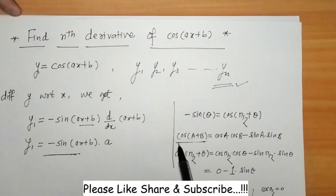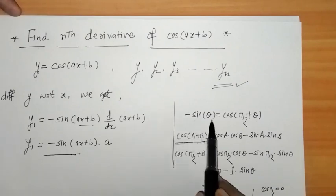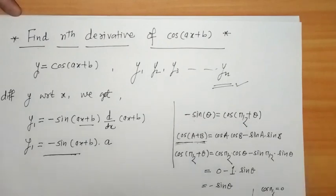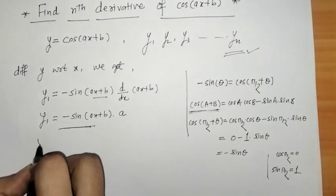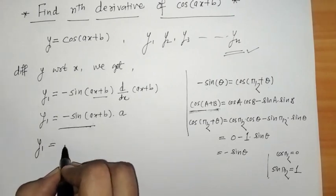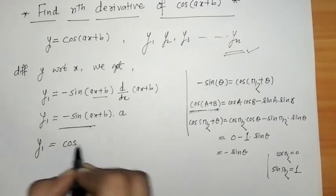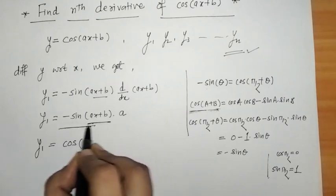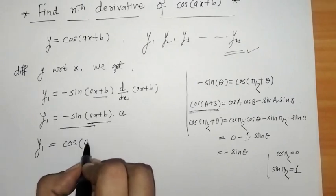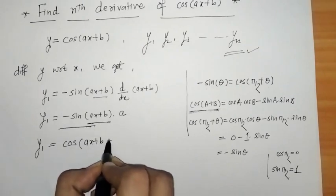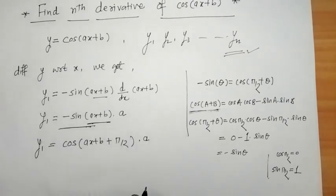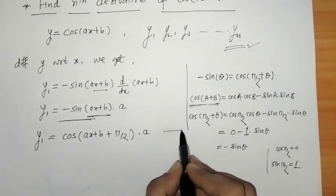Using the identity -sin θ = cos(π/2 + θ), and treating (ax + b) as θ, we can write y1 = cos(ax + b + π/2) · a. This is the first derivative expressed as a cosine term.